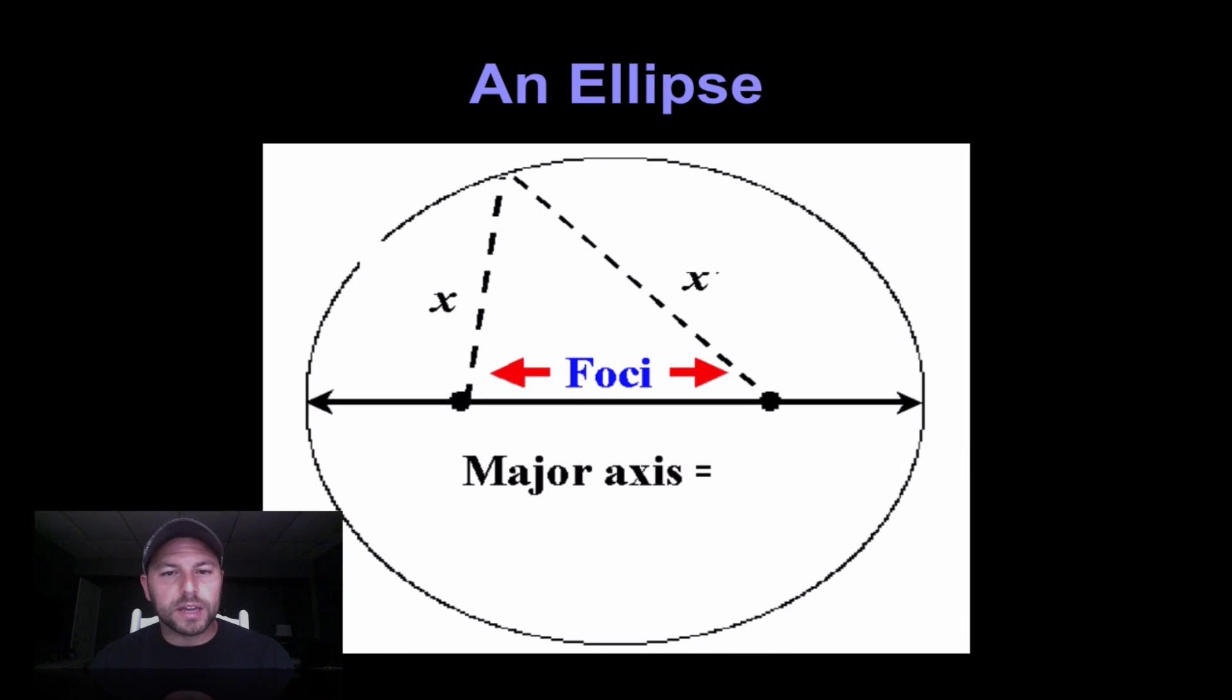This is just once again looking at different components. The major axis is basically your diameter. Goes from one side to the other here like that. Your foci are these two points. This image also very important with the parts.